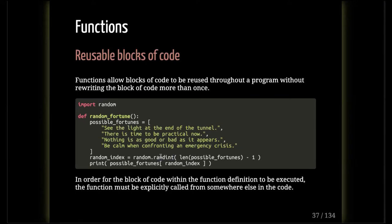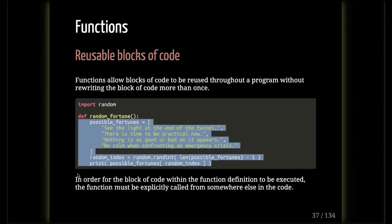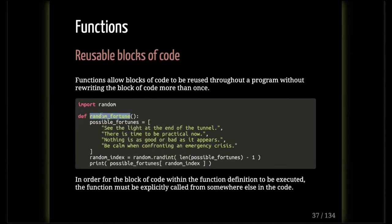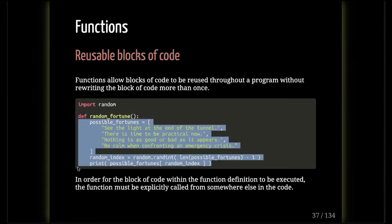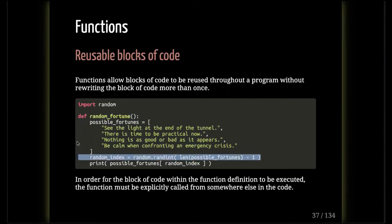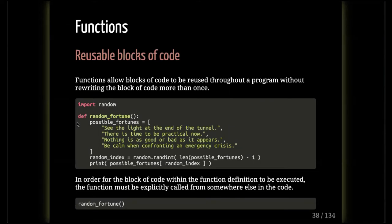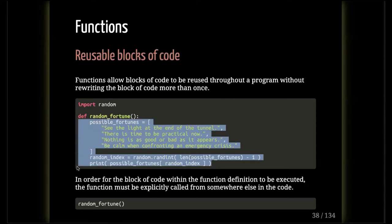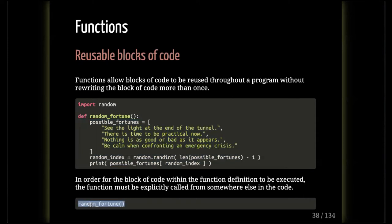In order for that to be executed — a function is not run when the Python interpreter reads the def statement. When the interpreter reads 'def random_fortune', it takes the block of indented code and stores it away for later use. It's a labeled area in memory called random_fortune with the code stored in it, waiting for you to explicitly call that function. Only when you write 'random_fortune()' somewhere else in your code will it actually go and run that block of code.